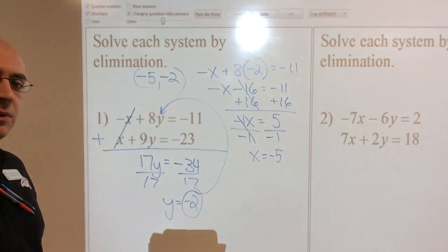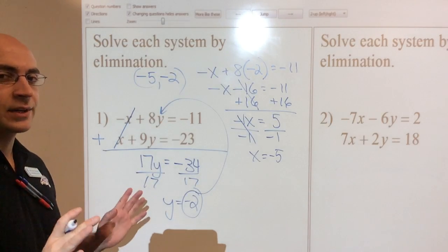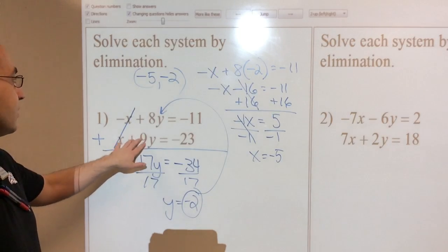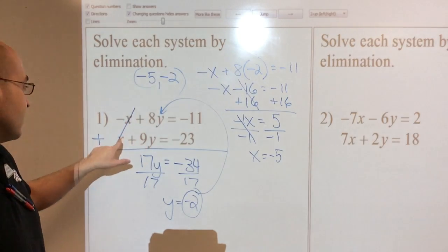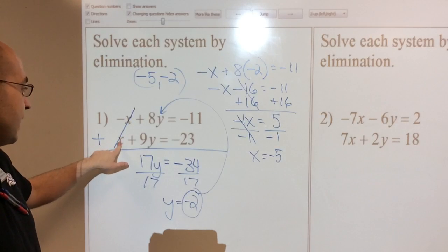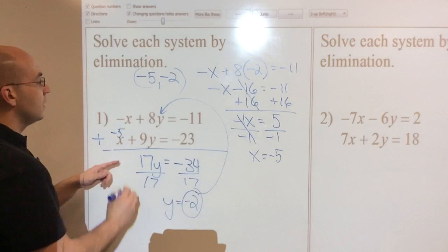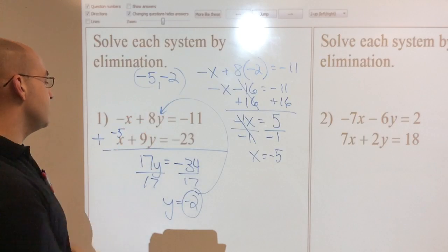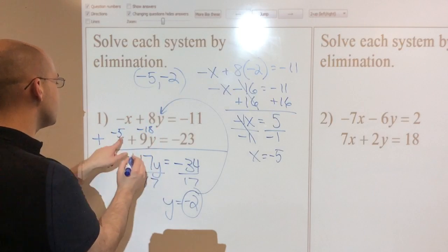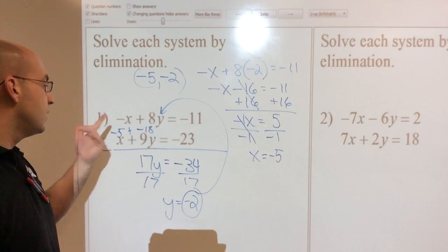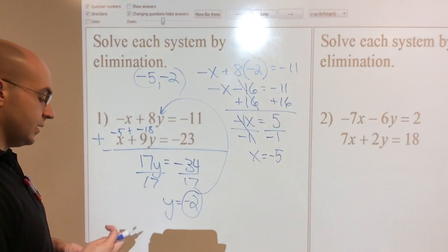Pretty good. I'm going to plug them in really quick just to make sure. I did a lot of work here, so I want to make sure I don't make a silly mistake. I'm going to take this other equation. That's an x value, so I'm going to put it right there. So negative 5, that becomes a negative 5. And 9 times negative 2 is negative 18. So negative 5 plus a negative 18 should equal negative 23, and it does. So I'm good to go.